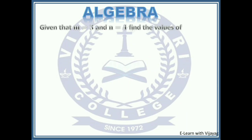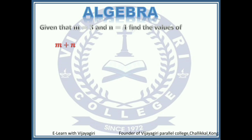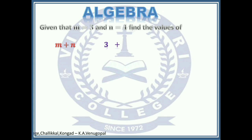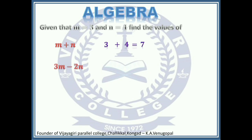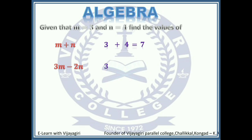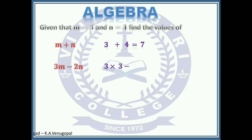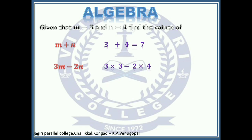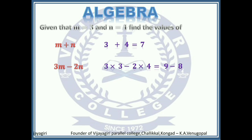Let's see some examples. Given that M equals 3 and N equals 4. Find the value of M plus N: substitute M as 3 and N as 4, so 3 plus 4 gives an answer of 7. Now for 3M minus 2N: 3M means 3 times M, so 3 times 3; 2N means 2 times N, so 2 times 4. We do multiplication first, giving 9 minus 8, and the answer is 1.